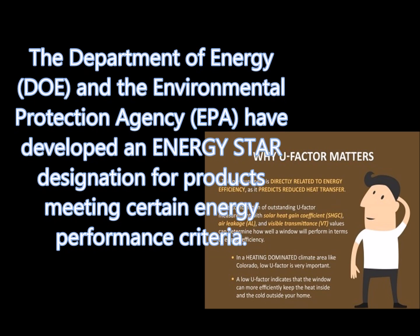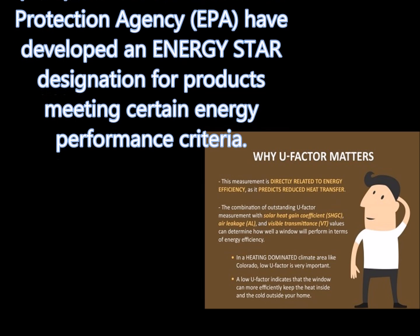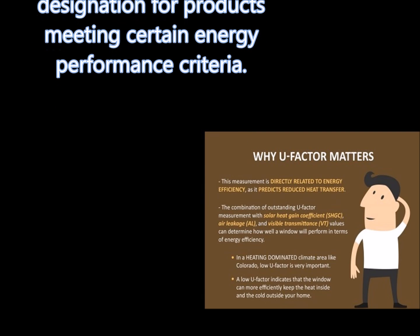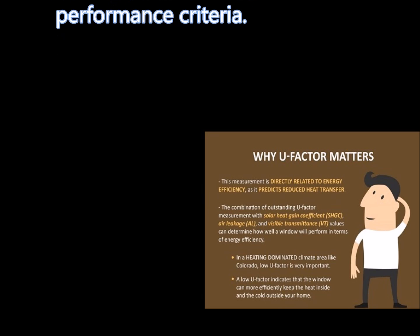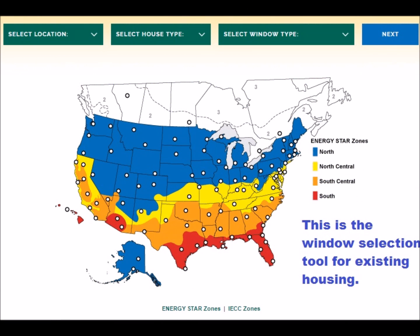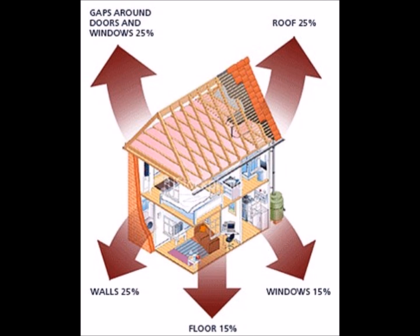Windows that have the Energy Star designation will be labeled showing the zones in which it is qualified. Since energy efficient performance of windows, doors, and skylights varies by climate, product recommendations are given for four U.S. climate zones. For making comparisons among Energy Star products, use the NFRC label or the NFRC certified products directory.